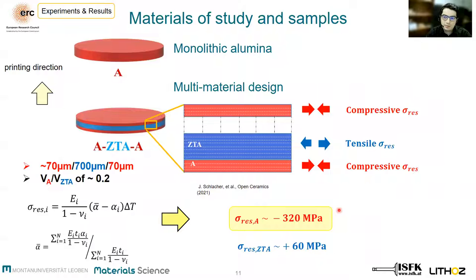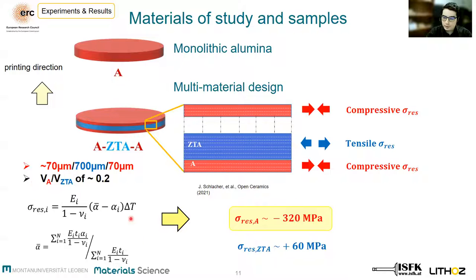By knowing this, how can we combine our system? A reference material was printed in a disc shape — 30 specimens for testing — and another 30 specimens of an appropriate multi-material design. We decided to use a design with 70 microns in the alumina outer region and 700 microns in the embedded zirconia-toughened alumina. Estimating the residual stresses according to these equations, we would get compressive residual stresses of 320 MPa in the surface region, which is five times higher than the tensile residual stresses in the embedded region.